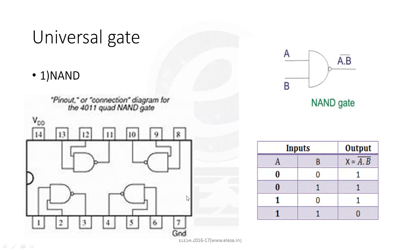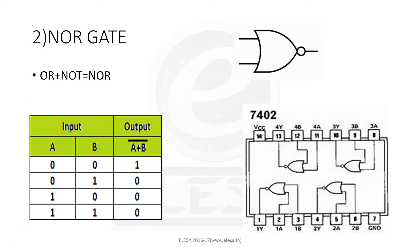Now, we look forward to NOR gate. The logic symbol for NOR gate is here. It is the combination of OR plus NOT, which equals NOR, and its output is the complement of OR gate. The IC number for NOR gate is 7402, and its input-output combinations are the same as we have already seen.